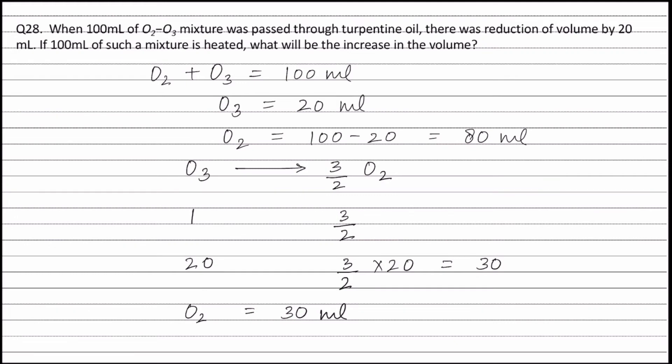Now, final volume of oxygen is equal to volume of oxygen present initially that is 80 ml plus volume of oxygen formed from ozone that is 30 ml, and this is equal to 110 ml.